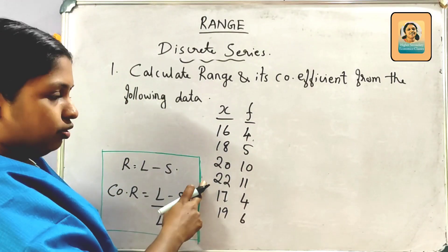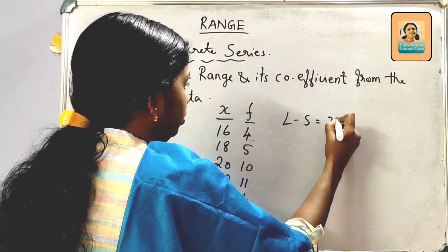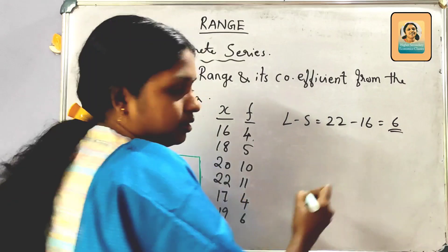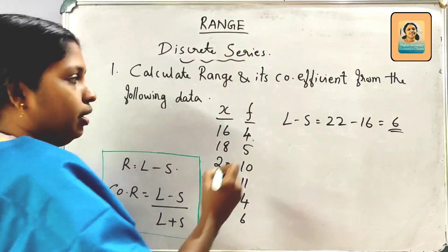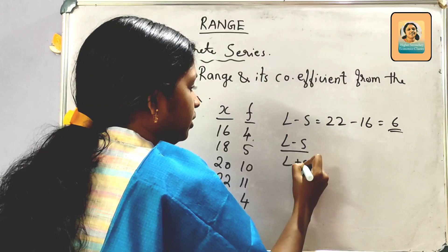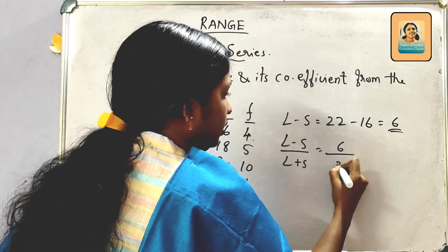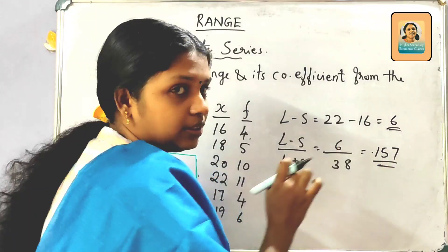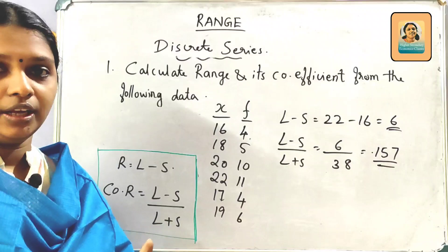The largest value L is 22 and the smallest value S is 16. Range: L minus S = 22 minus 16 = 6. Coefficient of Range: L minus S divided by L plus S = 6 divided by 38 = 0.157. That is the coefficient for the discrete series.